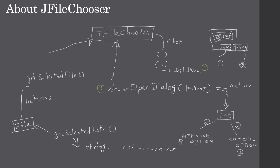So the flow is: first construct the JFileChooser object, then call showOpenDialog to present the dialog to the user. The user picks Open or Cancel; we check whether it's approveOption or cancelOption. If it's approveOption, we call getSelectedFile, which returns a file object, and from that we call getPath to get the string. We then use that string to update our text box.